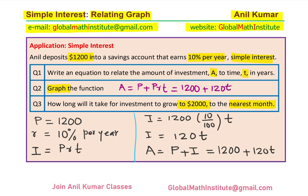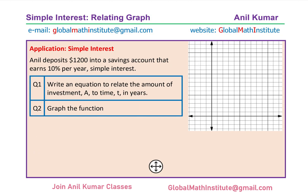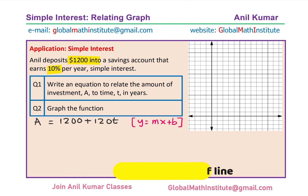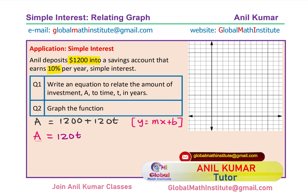Now in part 2, we will see how to graph this particular relation. Part A is clear — the equation. Let us look into the graph. We have the equation which we need to graph: since the investment is $1200 and the amount every year earns interest of 10%, the equation is A equals $1200 plus $120T. This reminds you of the equation of a line. You can relate it with Y equals MX plus B. So I could rewrite this equation in the form: amount A equals 120T plus 1200.